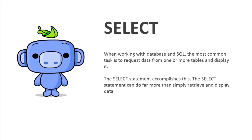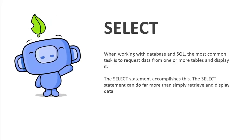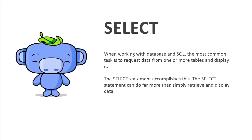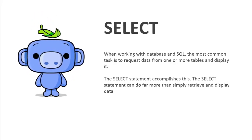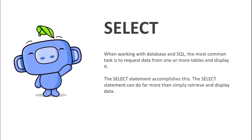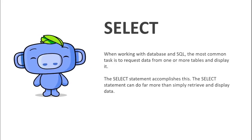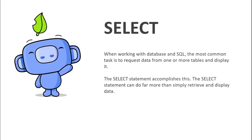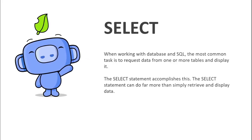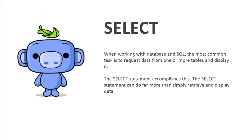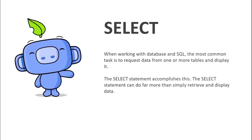The SELECT statement can do far more than simply retrieve and display data. We will also see how to create new columns — for example, calculating a value from an existing column and storing it under a new column name. We will also see how to do text concatenation, that is, combining two columns and naming it as a single column which contains both data.